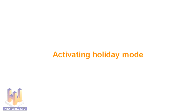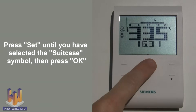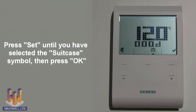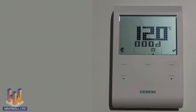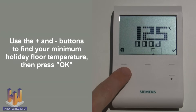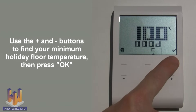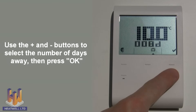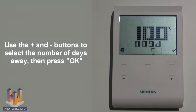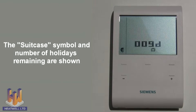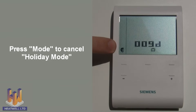Activating holiday mode. Press the set button until you have selected the suitcase symbol, then press the OK button. The display will start flashing, which means you can now use the plus and minus buttons to select your desired minimum temperature while you're away — in this case we'll select 10 degrees. Press the OK button to confirm the temperature. Now use the plus and minus buttons to select how many days you'll be away, up to 365. When you have selected the number of holidays, press the OK button to confirm. The unit is now in holiday mode, as the suitcase symbol is shown at the bottom of the screen. Above that are the days remaining on your holiday. To cancel holiday mode at any time, simply press the mode button.